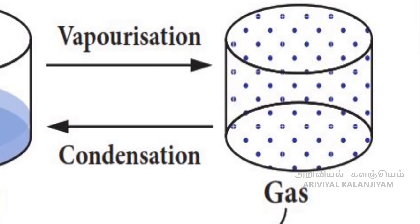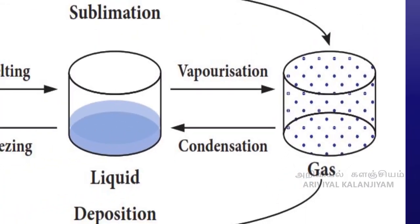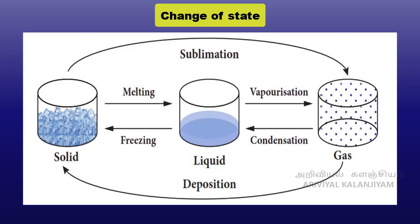Since water vapour escapes to the surrounding, the water level decreases. From this, we understand that heat energy causes change in the state of substances. When heat energy is removed, changes take place in the reverse direction. If heat energy is supplied to or taken out from a substance, it will undergo a change from one state of matter to another.